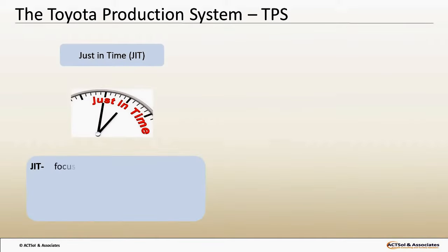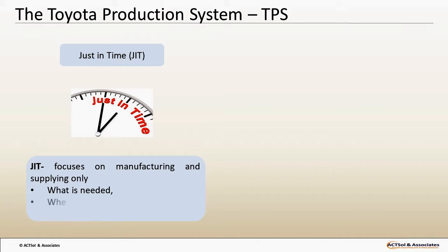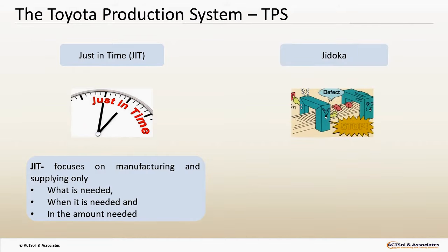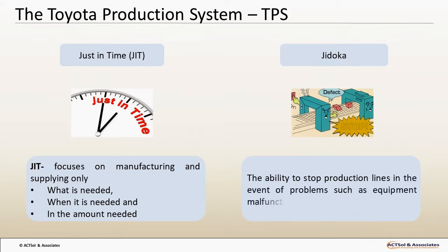JIT focuses on manufacturing and supplying only the output — what is needed, when it is needed, and in the amount it is needed. This system reduces inventory and strives to prevent both early and over production. Jidoka means the ability to stop production lines in the event of problems such as equipment malfunction, quality issues or late work. It helps prevent the passing of defects and helps identify and correct problem areas during localization and isolation.